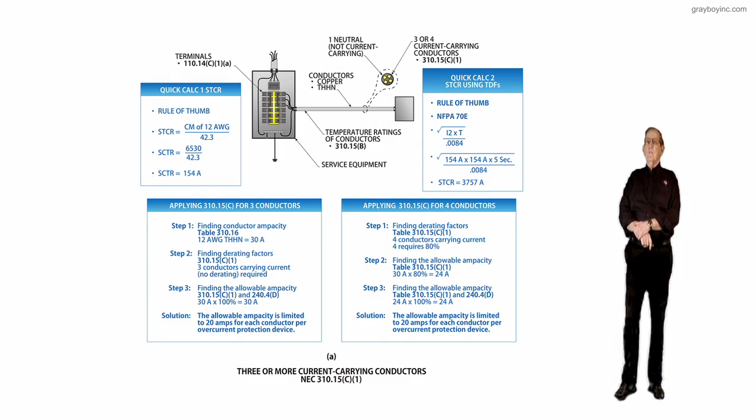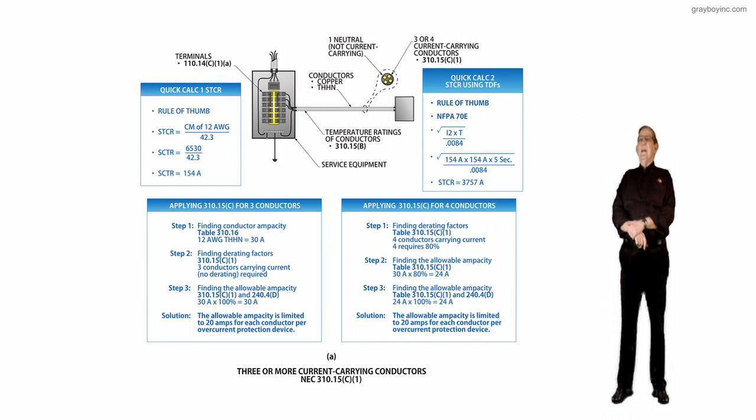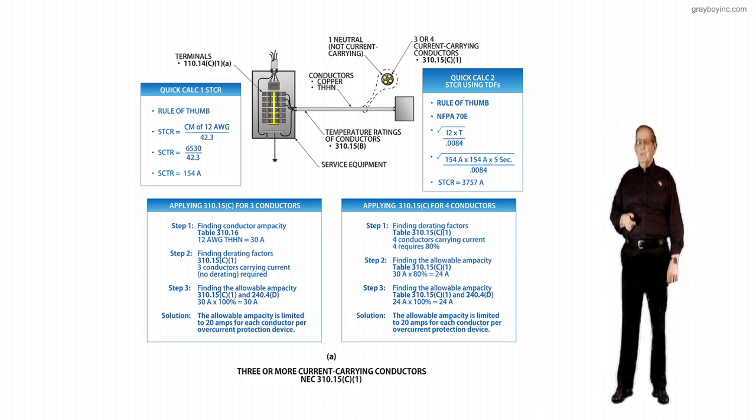That's a good rule of thumb that engineers have used for a long time. Now notice if you had 4 current carrying conductors instead of 3, you don't use method 1, you go to method 2. In table 310.15 C1, 4 conductors carrying current requires 80%. In other words, your neutral is considered a current carrying conductor.